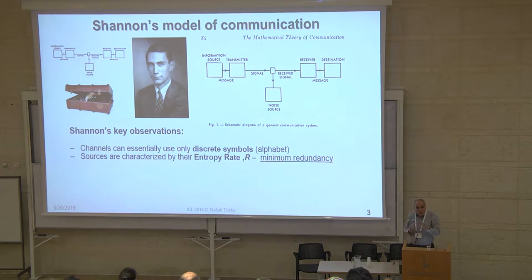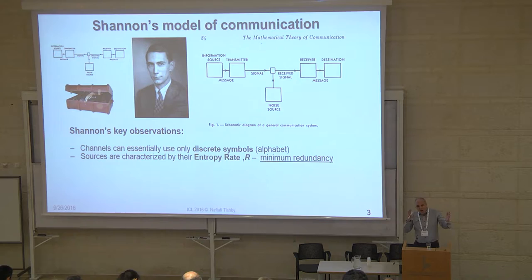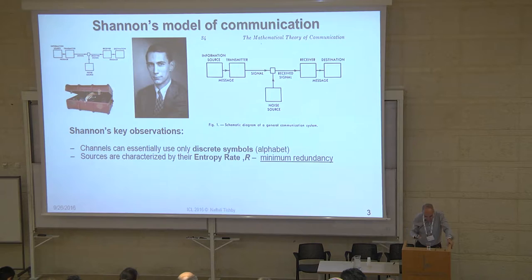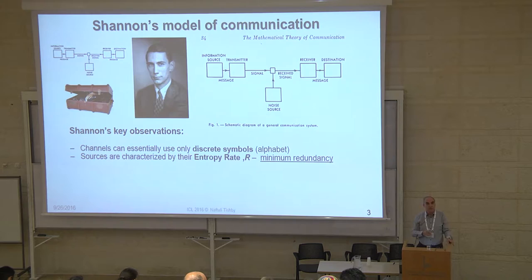Shannon realized that the only thing that matters about the source for the communication problem is not the meaning, depth, or content, but something he called the source entropy rate — essentially, how much is really the essential content that you cannot reduce or compress any further. It's what we call minimizing the redundancy of the source. There's some function of the statistics of the source that determines its entropy rate — essentially how many truly distinguishable things need to be transmitted.